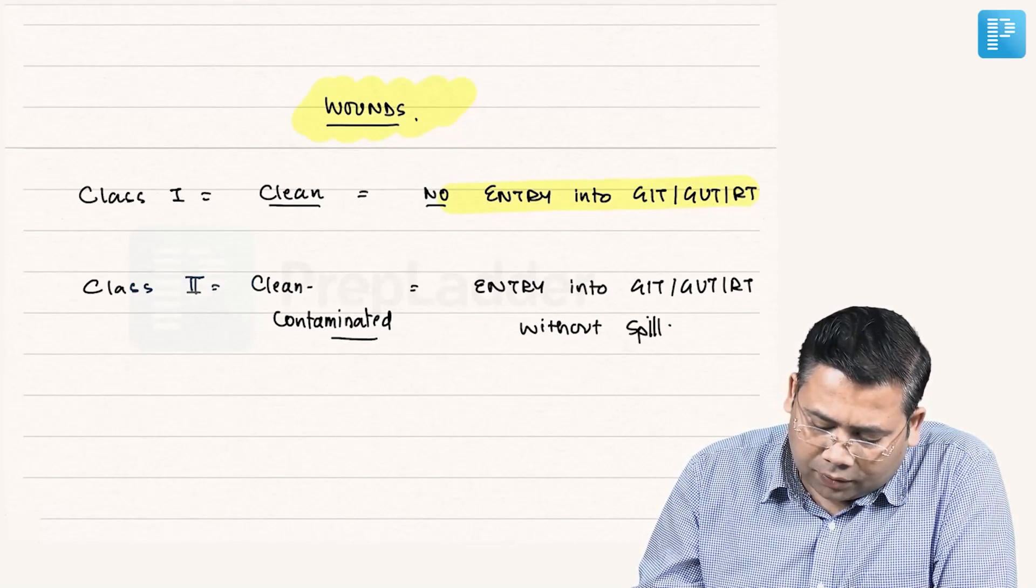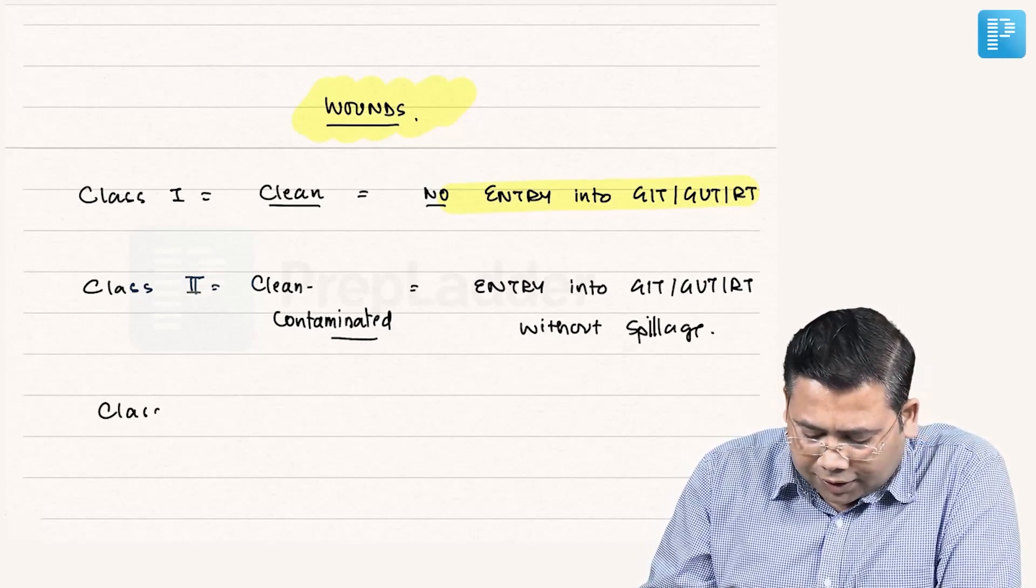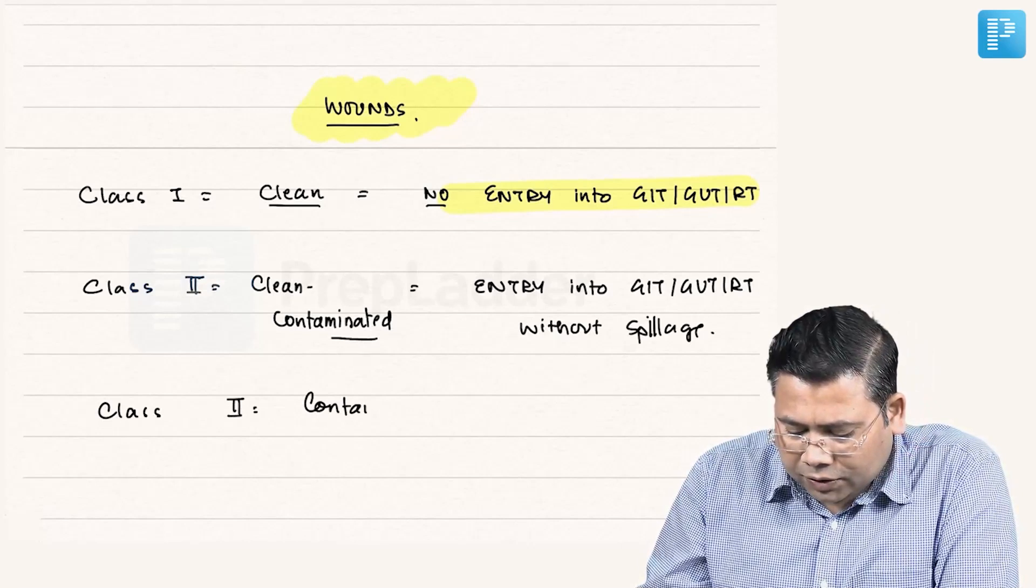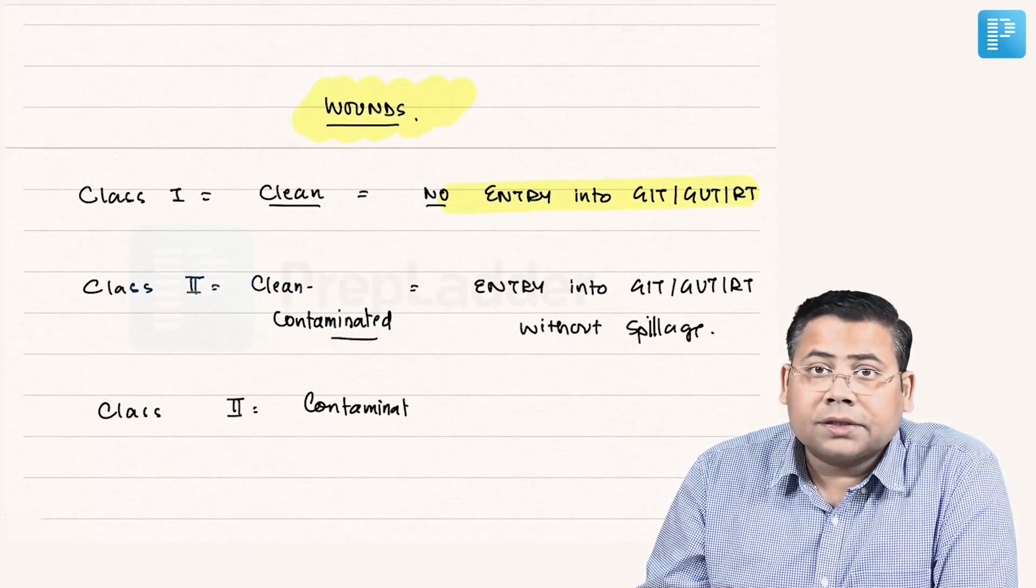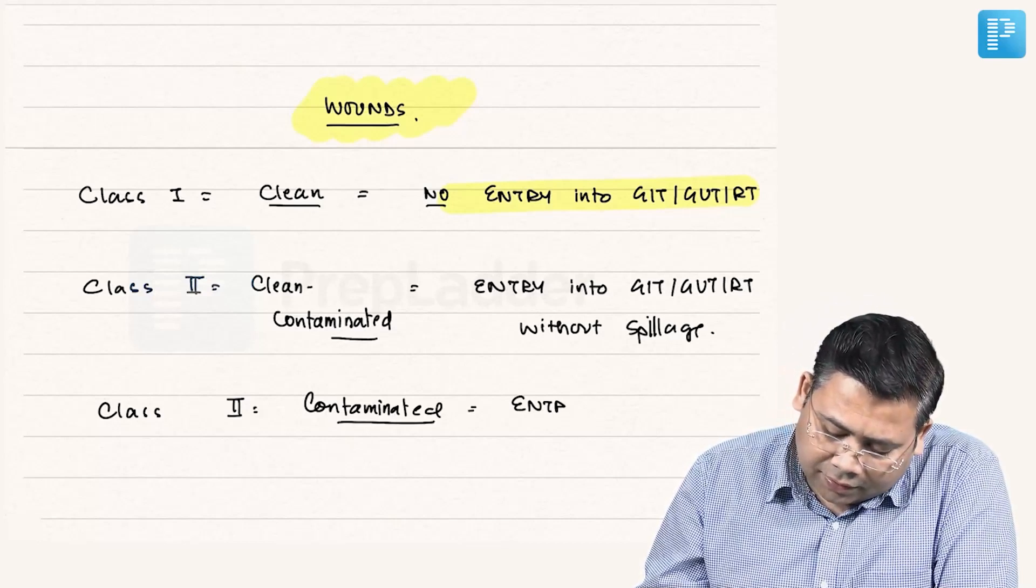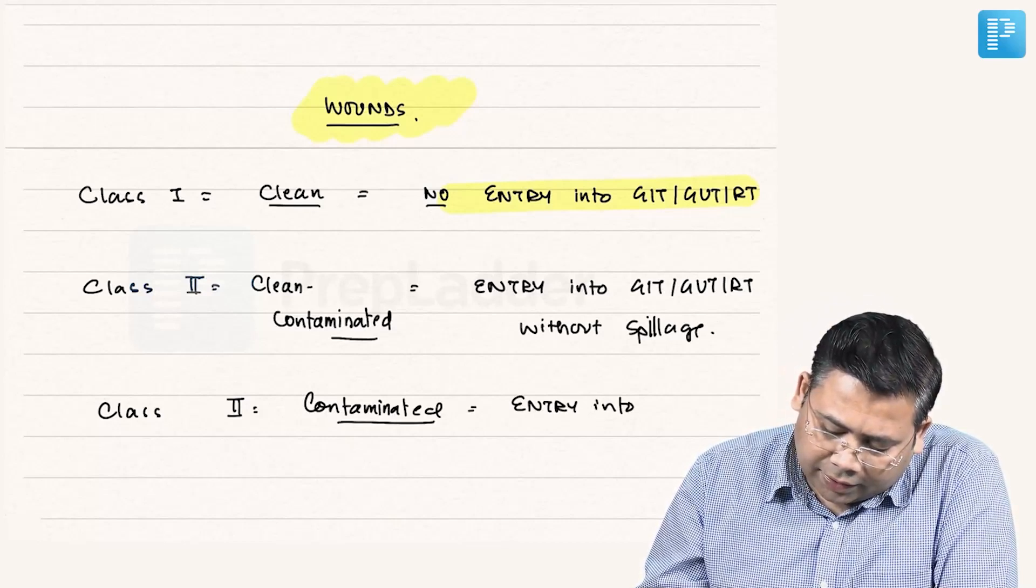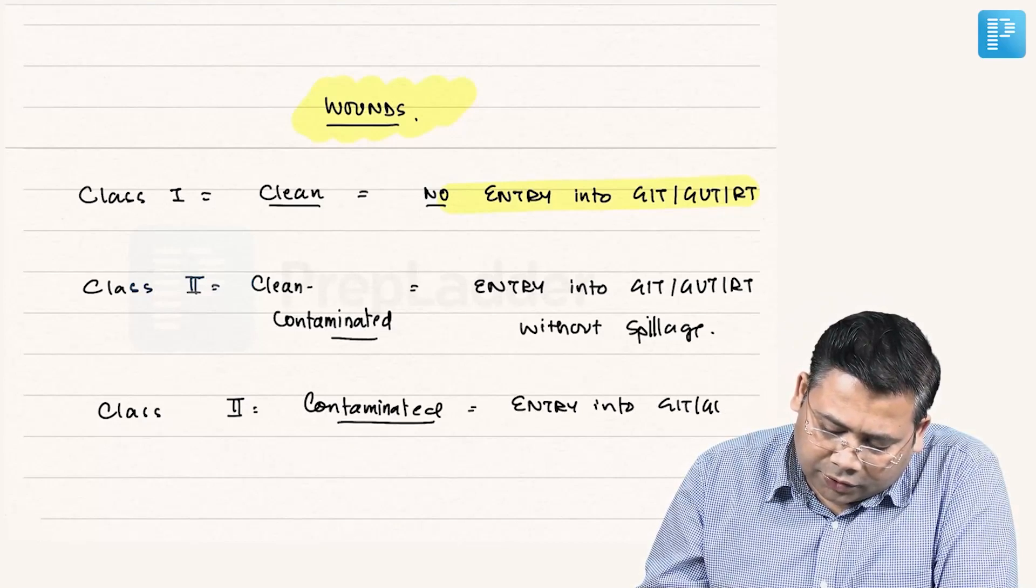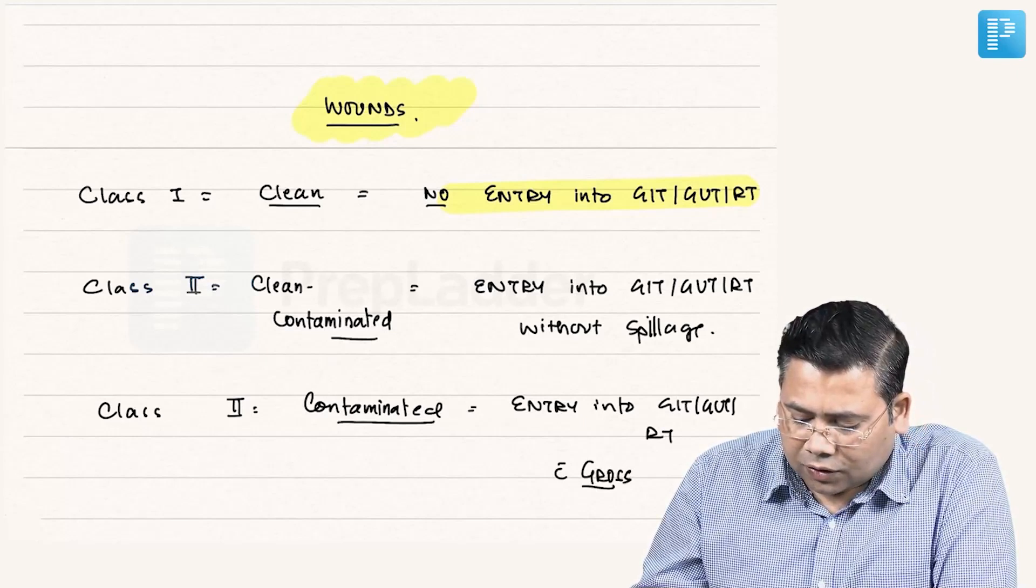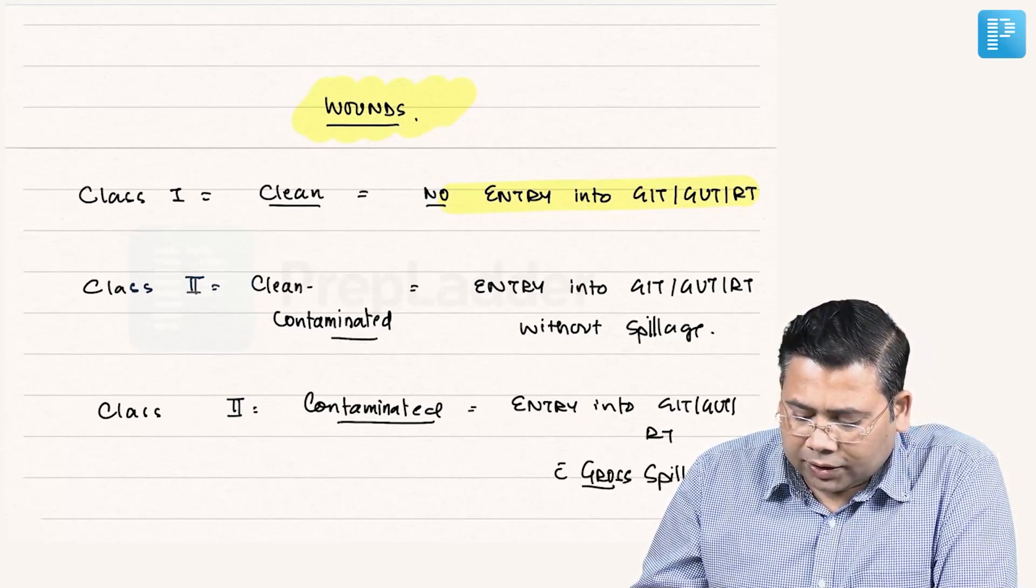If you talk about Class 3 wounds, they are contaminated wounds. What is the difference between this and Class 2? There is entry into GIT, GUT, respiratory tract with gross spillage. So there is gross spillage in this. Not only this.